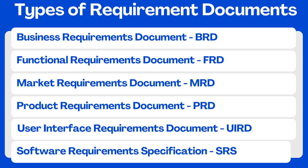Fifth, the User Interface Requirements Document (UiRD) describes the look and feel of the system's UI, often including mock-up screenshots and wireframes. It is written by the user interface design team. Sixth, the Technical Requirements Document (TRD) contains the software, hardware, and platform requirements of the product, including requirements like the programming language and processor speed required to run the system. A TRD is written by the engineering team.